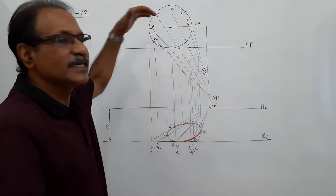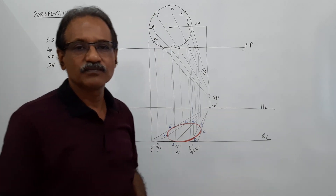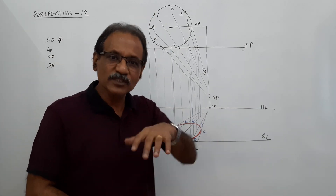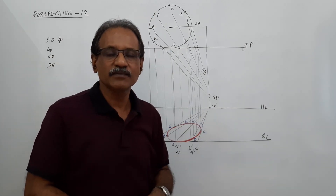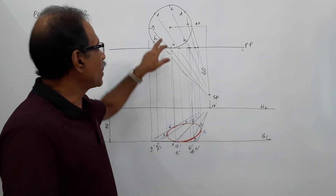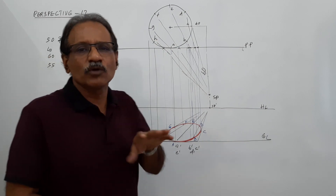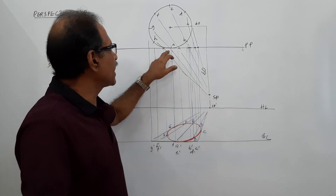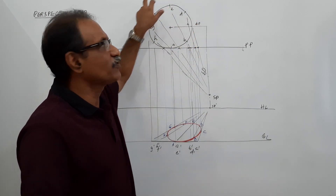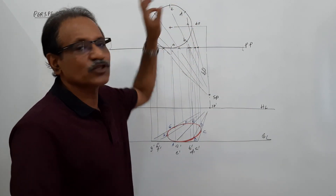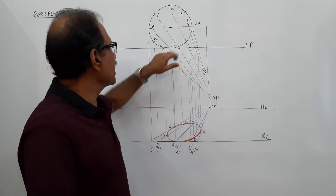Now suppose this is a cylinder instead of a circular lamina. What happens to the plan? The plan is almost the same, with an additional set of eight points on the circumference representing the top circle.